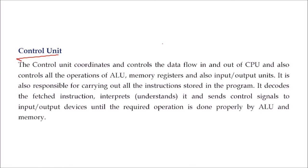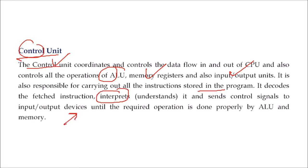The control unit coordinates everything that happens — where data is going, when to fetch, when not to fetch, when retrieval has to be done. The control unit controls all the operations of the ALU, memory registers, and input-output unit. It is responsible for carrying out all instructions stored in the program. The CU decodes the fetched instruction, interprets it, and sends control signals to devices until the required operation is done properly by the ALU or the memory.